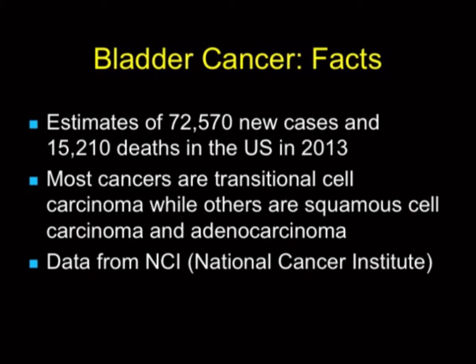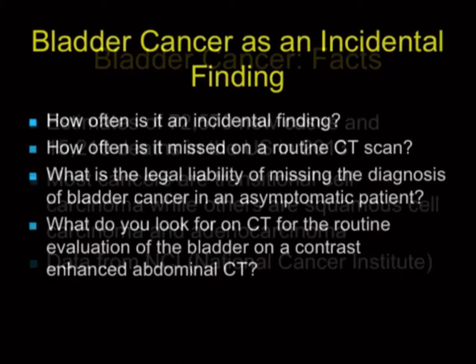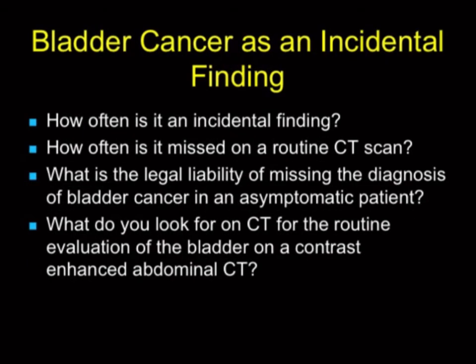The majority are transitional cell; others are squamous or adenocarcinoma. But the question is: how often is it an incidental finding, how often is it missed when it is an incidental finding, what is your legal liability, and what do you look for in early bladder cancer when you're not looking at a hematuria or bladder cancer patient? It's just there.